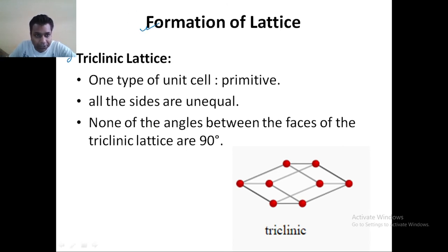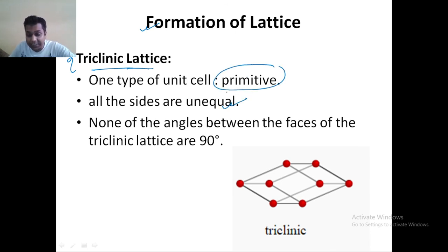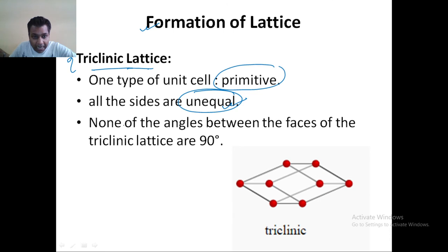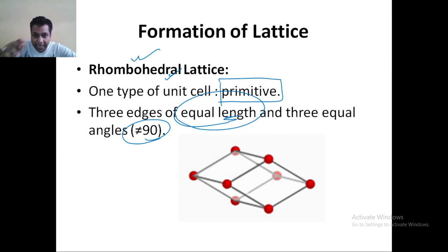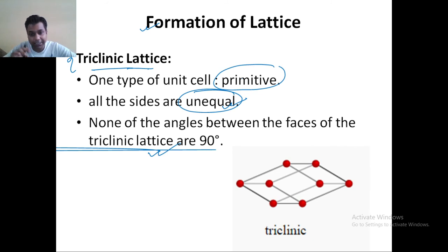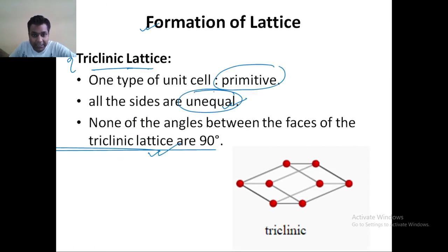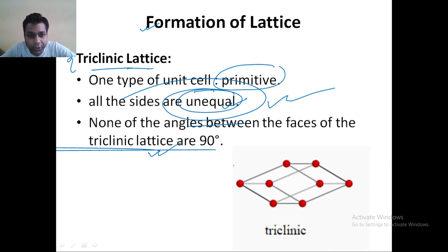The next one is your triclinic lattice. In this also, you have the primitive type. In this case, you have unequal sides. Try to understand the difference: in rhombohedral, you have equal length, but in case of triclinic, you have unequal length and none of the angles between the faces of the triclinic are 90 degrees. Rhombohedral and triclinic have the same angular relationship — angles not equal to 90 degrees — but in terms of the length of sides, in rhombohedral lengths are equal, while in triclinic lengths are unequal. We have to understand these differences carefully whenever we solve multiple choice questions.